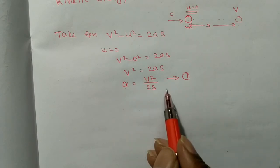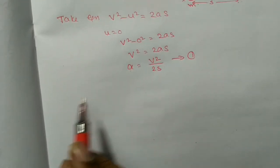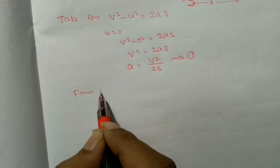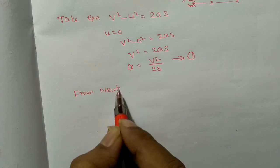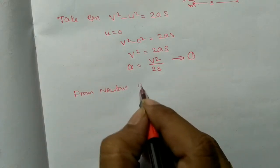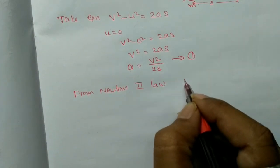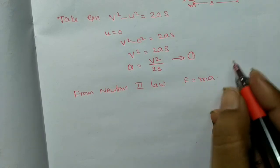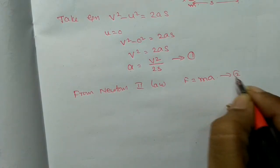A is equal to V squared by 2S. From Newton's second law, we know F is equal to MA. This is equation number 2.